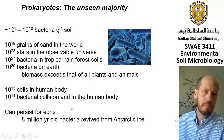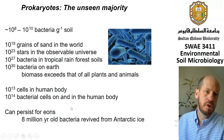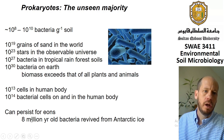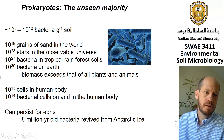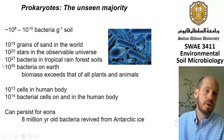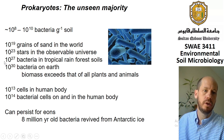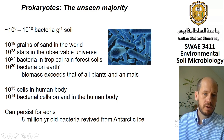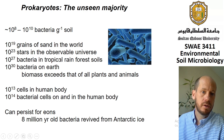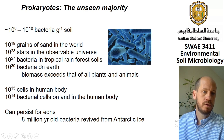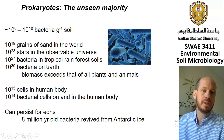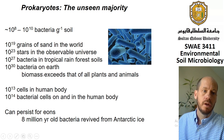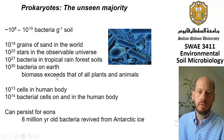We have about 10⁸ to 10¹⁰ bacteria per gram of soil. Just to put things in perspective: we have 10¹⁹ grains of sand in the world, 10²³ stars in the observable universe, 10²⁷ bacteria just in tropical rainforest soils, and 10³⁰ bacteria on Earth. So it's quite a lot of bacteria if you count by number of cells.